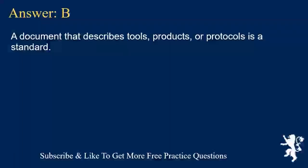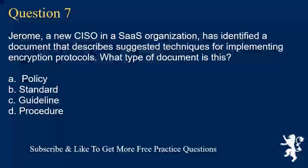Answer B. Question 7. Jerome, a new CISO in a SaaS organization, has identified a document that describes suggested techniques for implementing encryption protocols. What type of document is this? A. Policy. B. Standard. C. Guideline. D. Procedure.